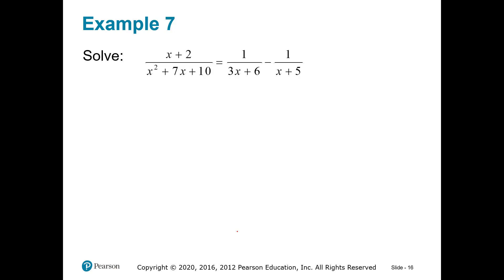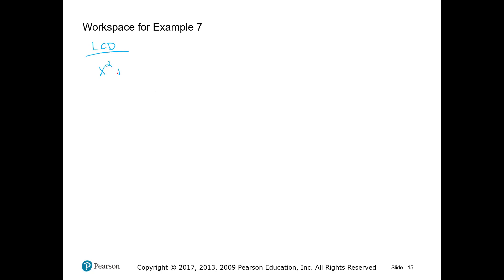One more example. There are the denominators — let's go find the LCD. We had x squared plus 7x plus 10, we had 3x plus 6, and x plus 5. First things first, you have to factor. Pause the video, factor that first denominator, and then come back. What I got when I factored it was (x plus 2) times (x plus 5). In the second denominator, I noticed both terms are divisible by 3, so I factor out a 3. And that last denominator is just x plus 5.